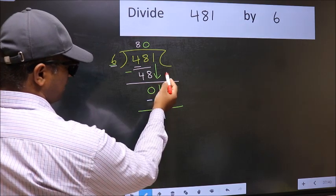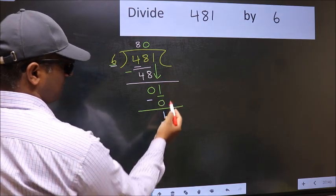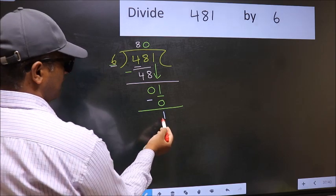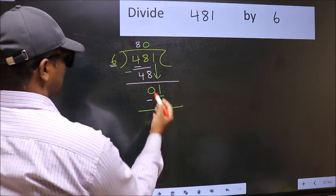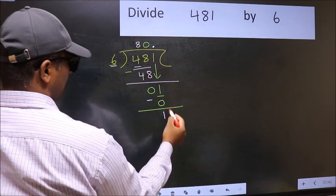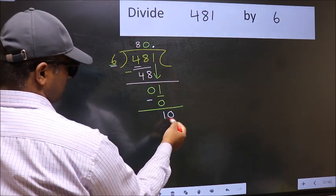Over here, we did not bring any number down, and 1 is smaller than 6. So now you can put dot and take 0. So, 10.